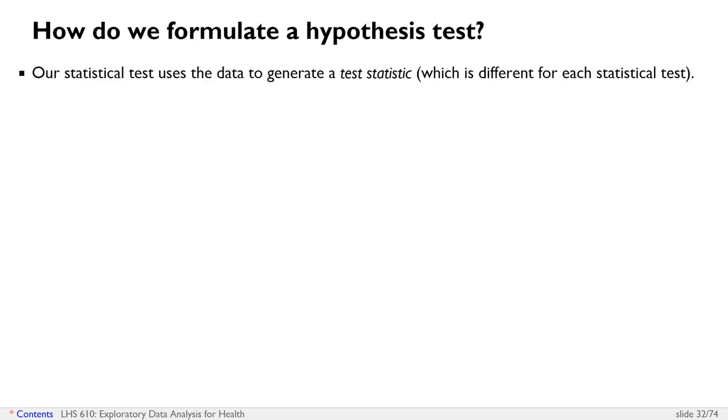The reason we formulate a hypothesis test is to try to answer a question. And so when we run a statistical test, that test often generates a test statistic, which is different for each statistical test. And then that test statistic gets converted into a p-value using additional information like degrees of freedom. And that p-value then is kind of broadly interpretable in a similar way across different types of tests.